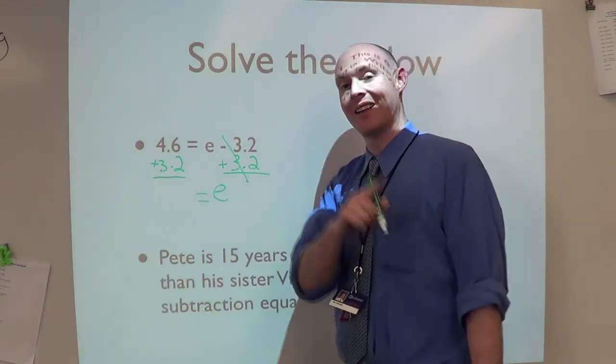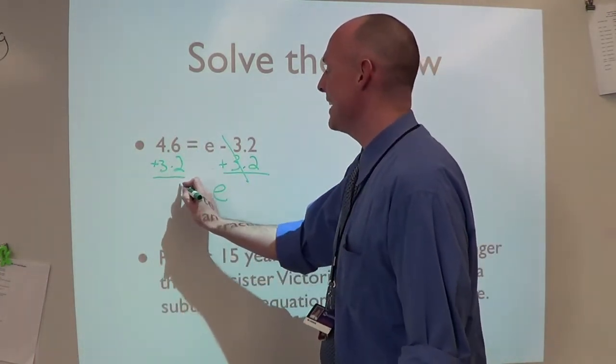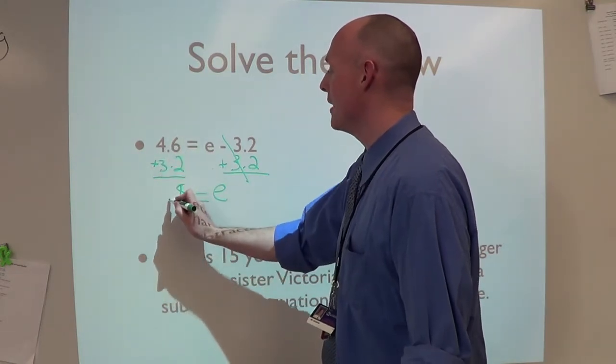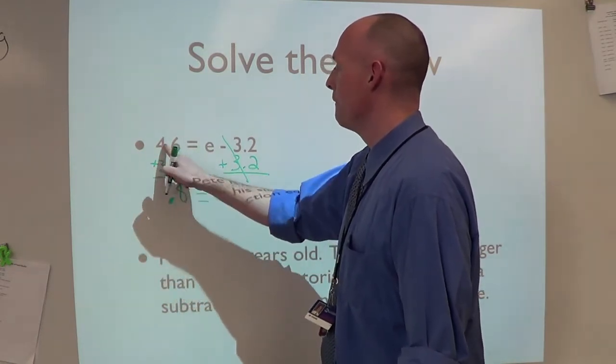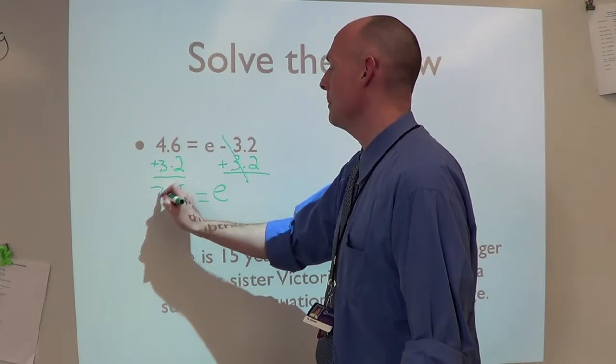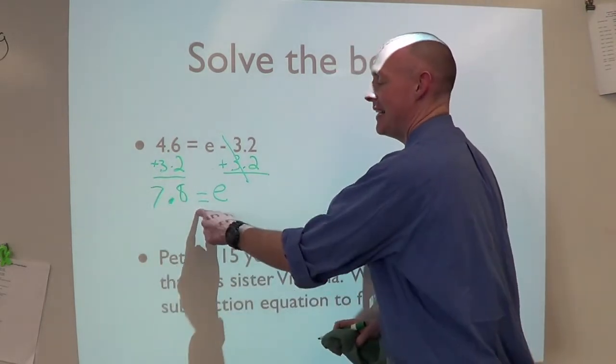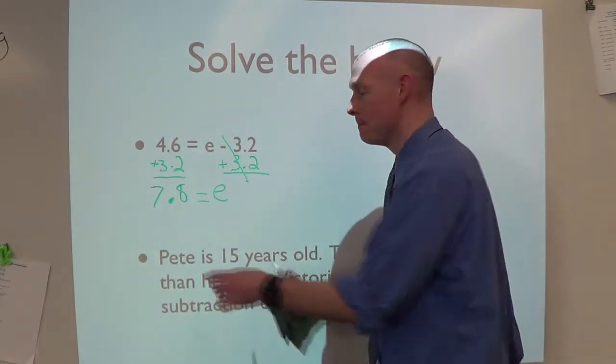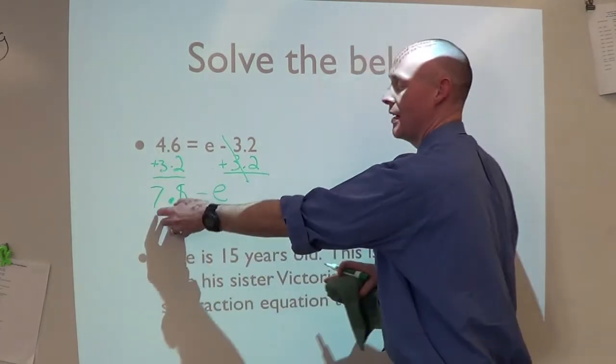e equals - now let's add. 6 plus 2 is 8, bring down the dot. 4 plus 3 is 7. 7.8 equals e. We could flip-flop it to e equals 7.8, but it means the same thing.